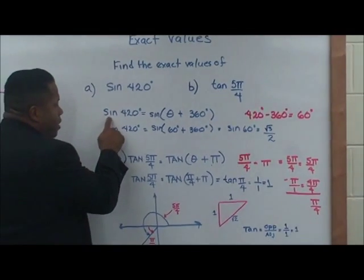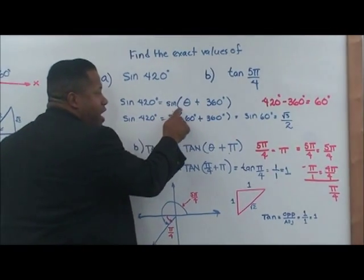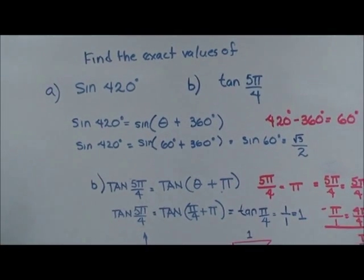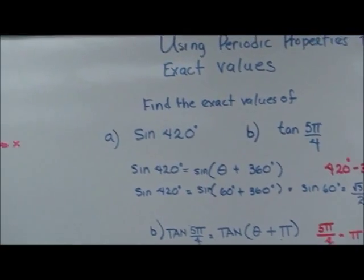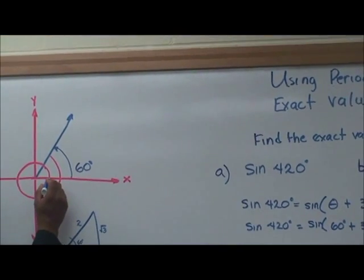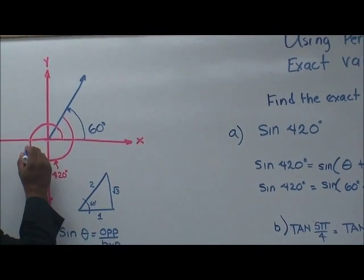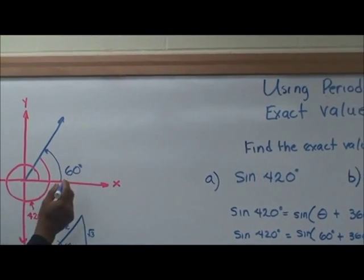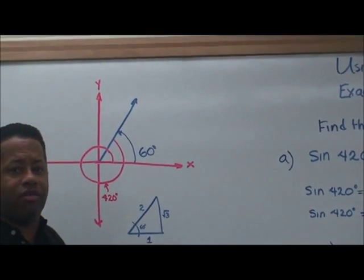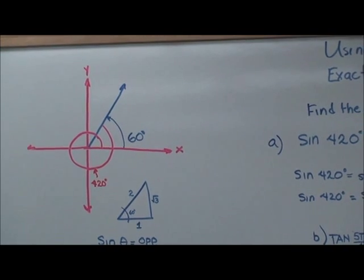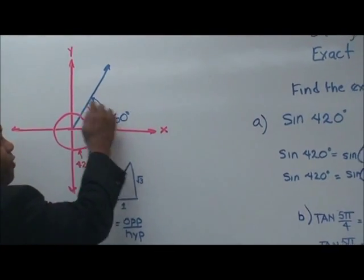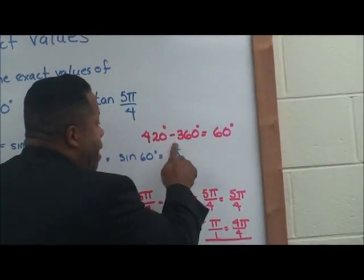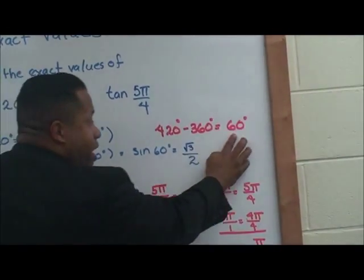Let's look at this closely. Sine 420 degrees is equal to sine of theta plus 360 degrees. We basically want to find theta here. Let's sketch the graph, starting from the reference line, going right 360 degrees and continuing on. 420 is right about in between 450 and 360, so here we have a reference angle of 60 degrees.